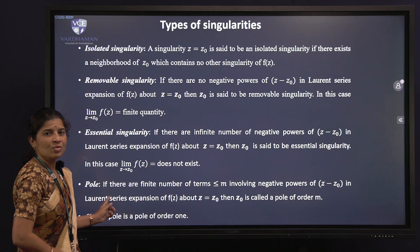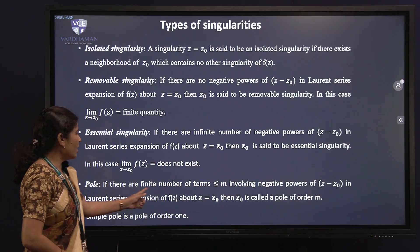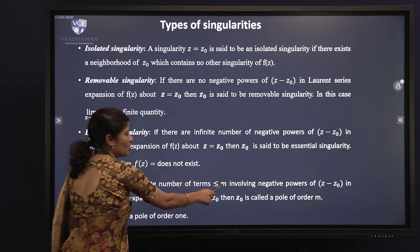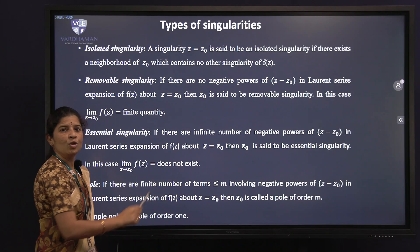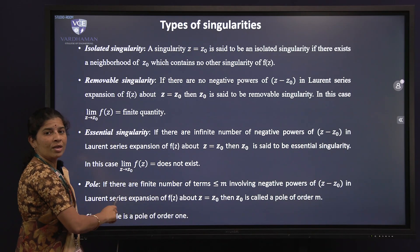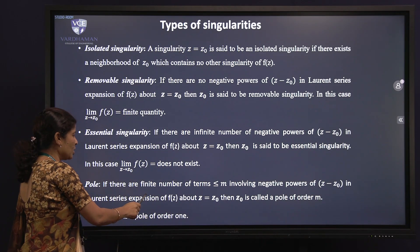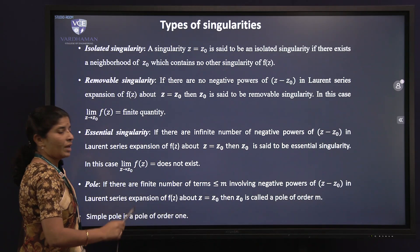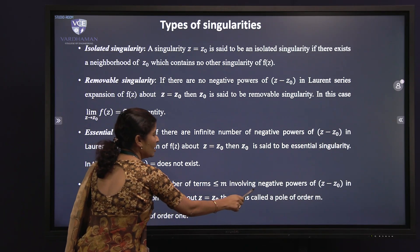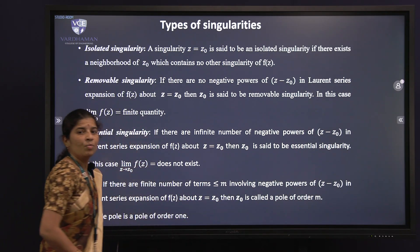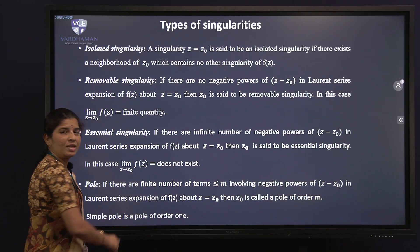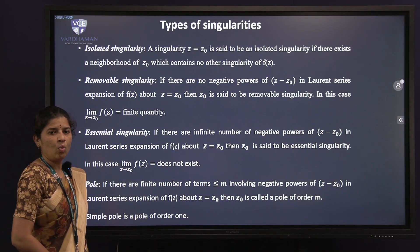The last type is the pole. If there are a finite number of terms — less than or equal to m — involving negative powers of (z - z₀) in the Laurent series expansion of f(z) about z = z₀, then z₀ is called a pole of order m. A simple pole is a pole of order 1.